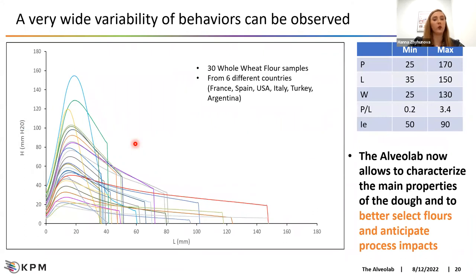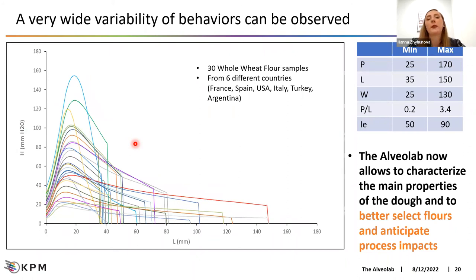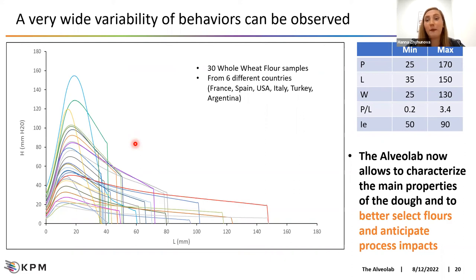We also tested 30 whole wheat flour samples from six different countries — Spain, USA, Italy, Turkey, and Argentina — and the variability is impressive. Most importantly, with Alveolab we can now characterize the main rheological properties of the dough and better select and anticipate the process impacts.